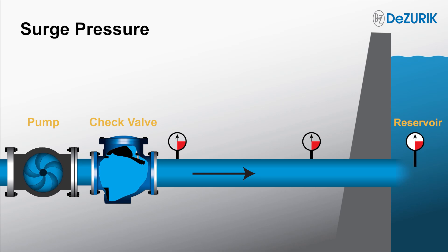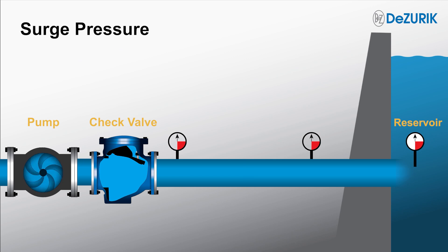Under normal operating conditions, the pump is running and the direction of flow is moving from the pump to the reservoir. During the downsurge wave, you'll notice a slight contraction of the pipe and a corresponding decrease in pressure shown on the gauges.